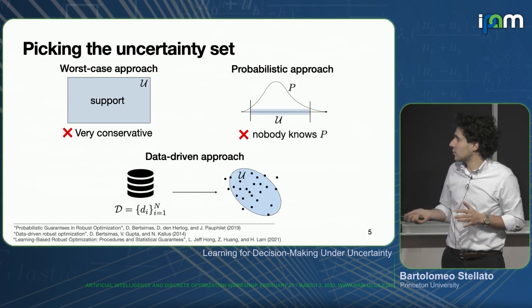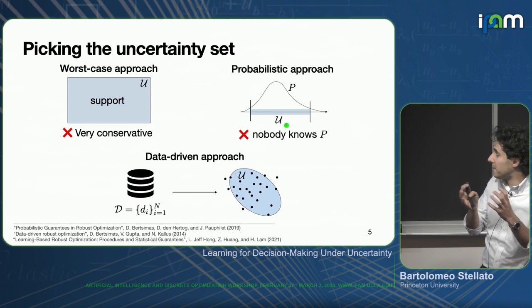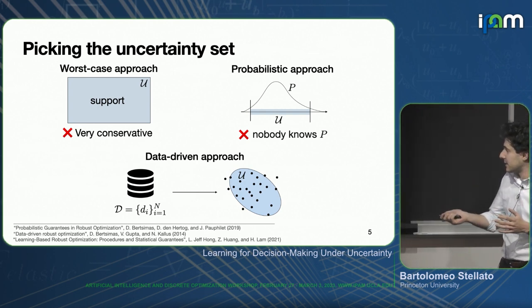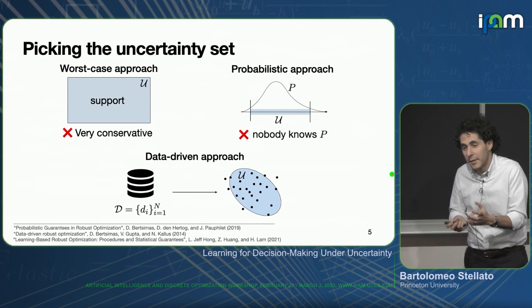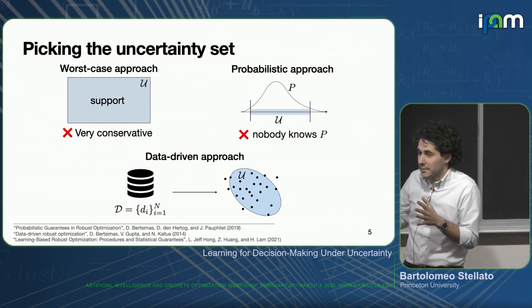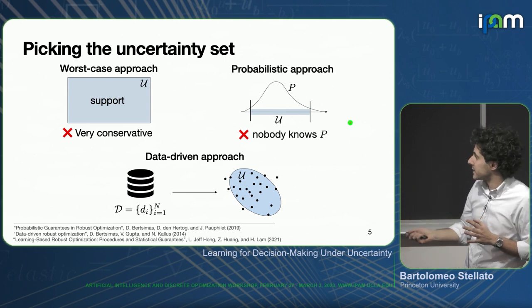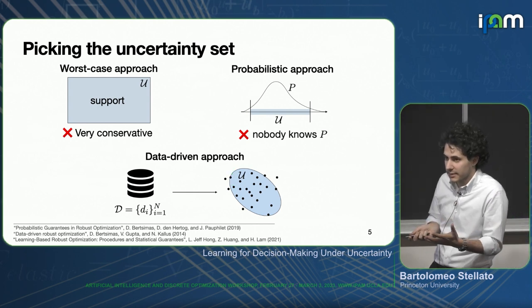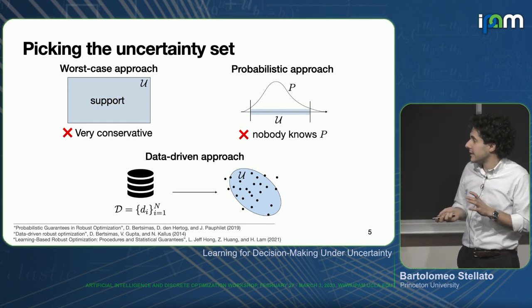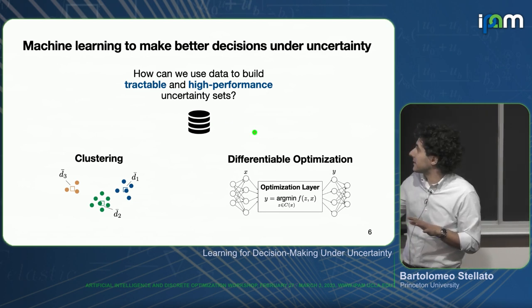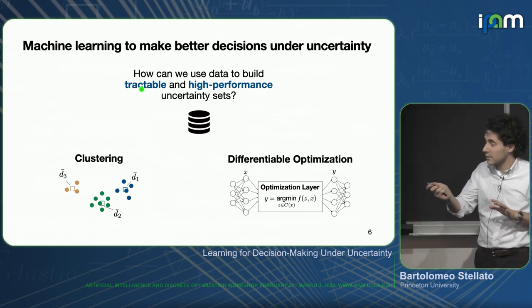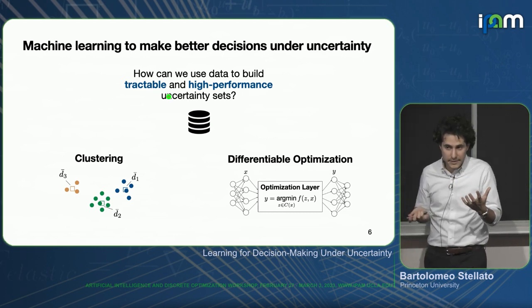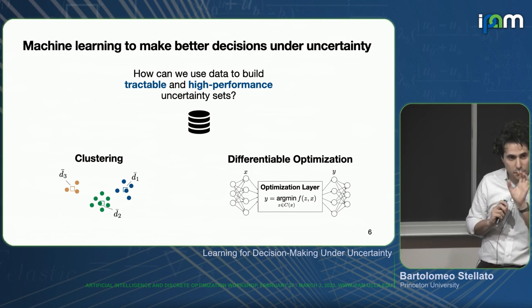More recently people started to look into data-driven approaches, where by using data of past realizations of the uncertainty you want to build uncertainty sets that work well. Compared to the big literature available in robust optimization, this is still at the very beginnings in terms of how we can use data and machine learning to build uncertainty sets and learn them properly. In this talk, I would like to use machine learning to build uncertainty sets that are tractable — so the resulting problems can be solved efficiently — but also high performance so we don't have overly conservative uncertainty sets.